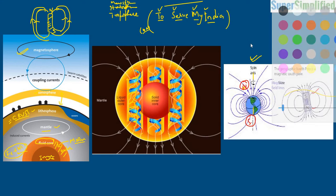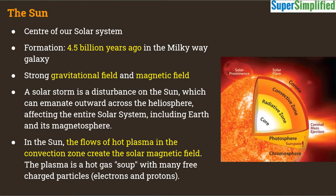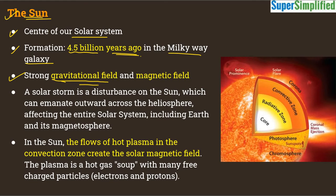Now let us understand something about the Sun. The Sun is the center of our solar system, and its formation took place 4.5 billion years ago in the Milky Way galaxy. It holds eight planets and several other heavenly bodies in their orbits due to its gravitation. Similar to Earth, the Sun also has its own magnetic field produced by a similar process.